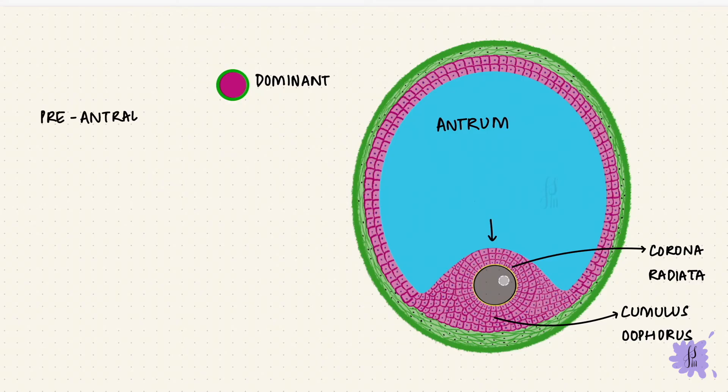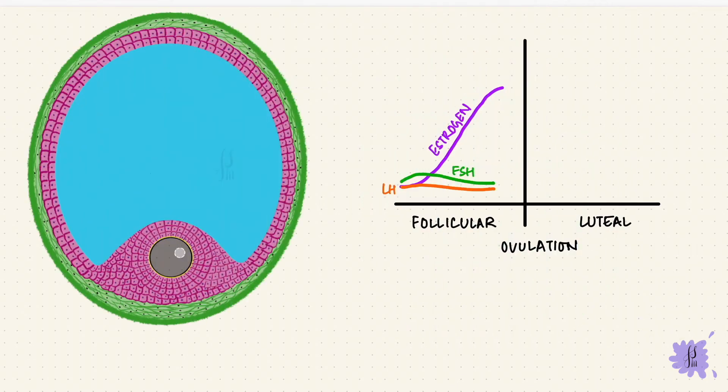For the pre-antral follicle to grow and form an antral follicle, FSH was needed. But for fast growth and maturation that happens afterwards to form the mature follicle, LH is needed as well. Just before ovulation, when the estrogen levels rise enough to cross a threshold, the feedback changes. I mentioned this before, remember where it becomes positive from negative. So that causes the LH and the FSH to rise. LH by much more and this is called the LH surge.